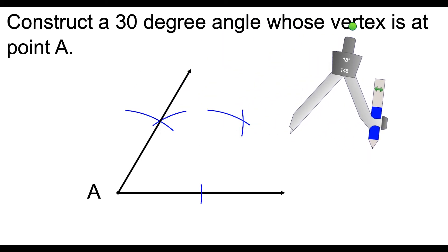So now to construct our 30 degree angle, what we're going to do is we're just going to go from point A, and we're going to go out like this, and we're going to go through that point of intersection that we just made.